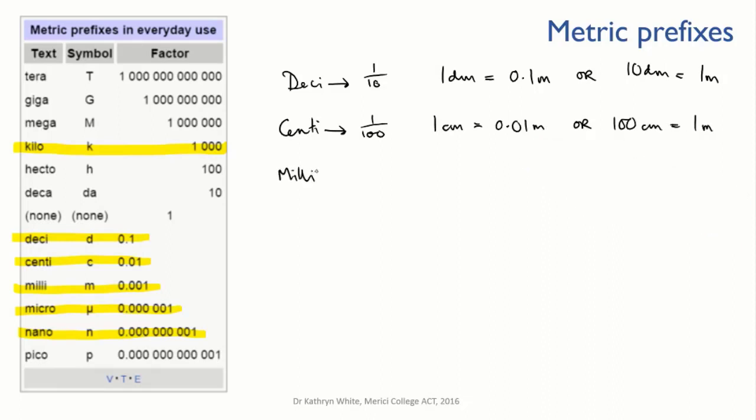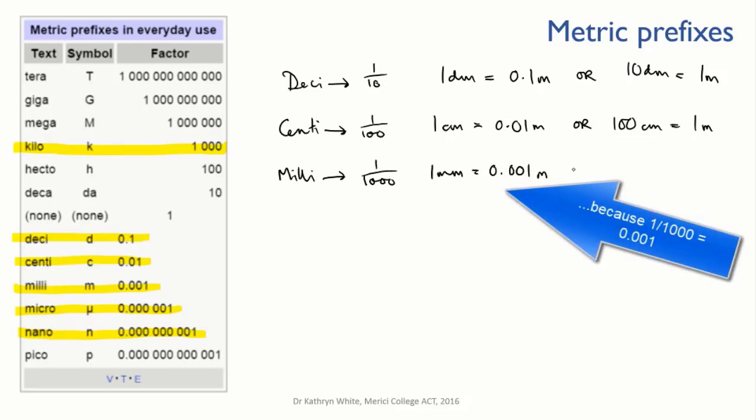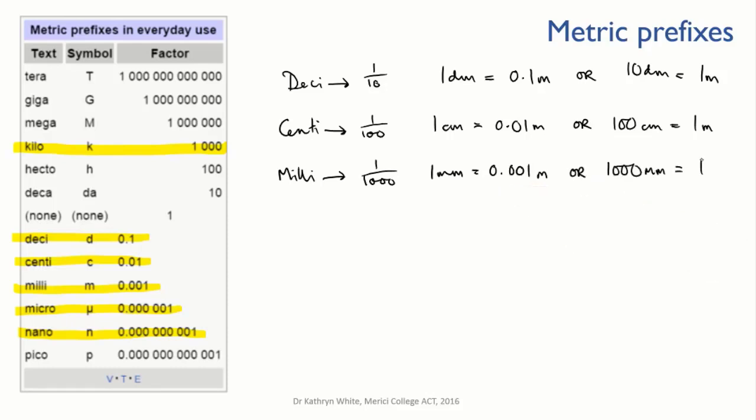Milli means 1/1000. One millimeter is equivalent to 0.001 meters, 1 times 10 to the minus 3 meters. Or we can say that there are 1,000 millimeters in a meter.